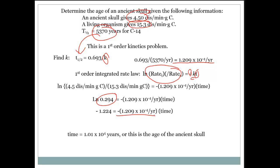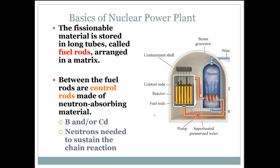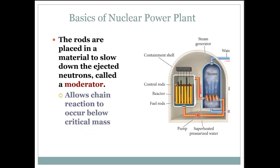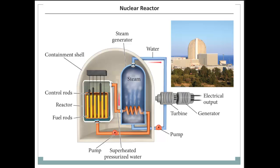Now we're going to turn our attention to nuclear power. The fissionable material is stored in long tubes called fuel rods — this is where the reaction is occurring. Between the fuel rods are control rods, made of neutron-absorbing material such as boron or cadmium. The neutrons needed to sustain the chain reaction are absorbed by these so the reaction doesn't get out of control. The rods are placed in a material to slow down the ejected neutrons called a moderator, which allows the chain reaction to occur below the critical mass. Here's a picture of a nuclear power plant where this is all occurring.